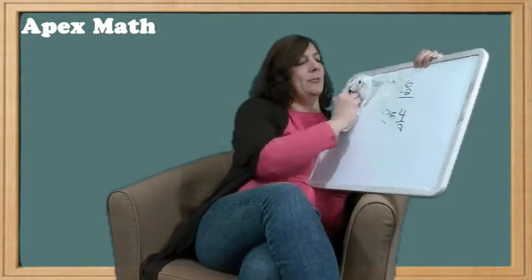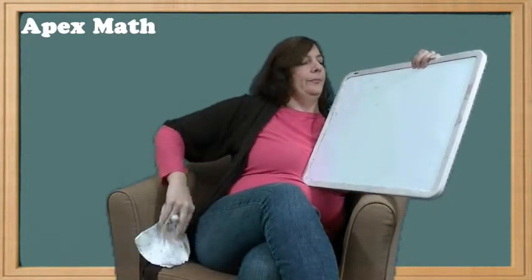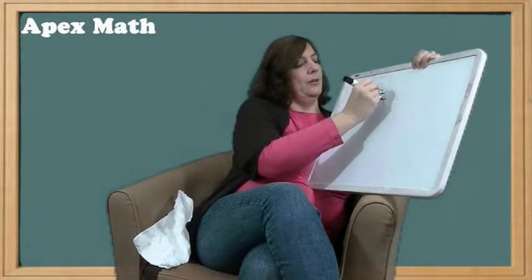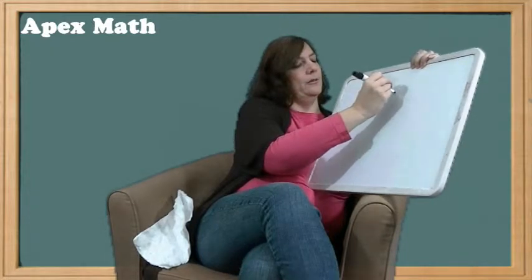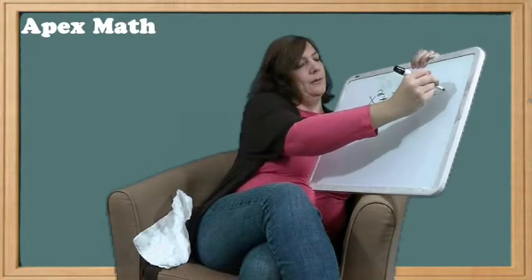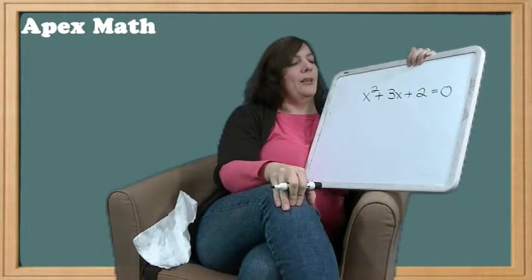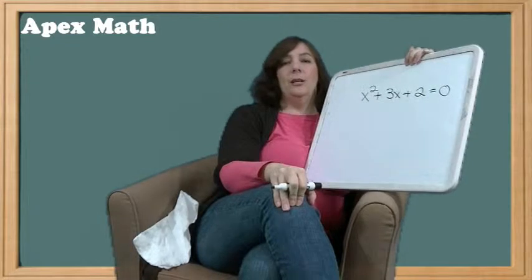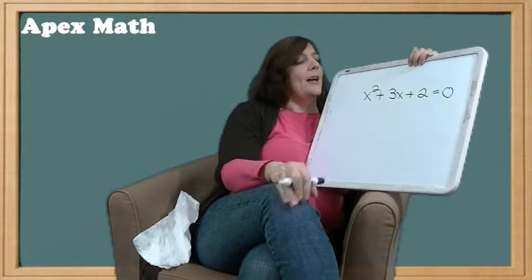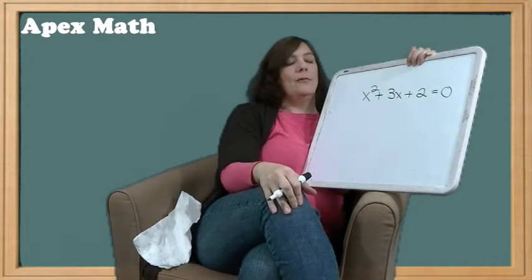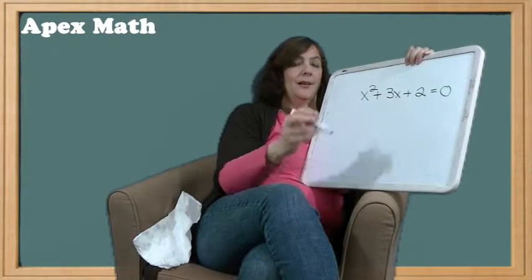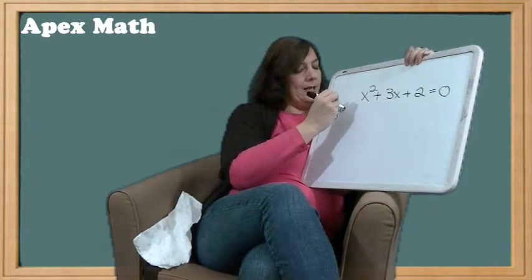The next type of function we're going to solve looks like this: x squared plus 3x plus 2 equals 0. Now you'll notice that this equation is a little bit different. On the x variable, it has a square value. So what type of equation is this? Hopefully you notice that it is a quadratic equation.